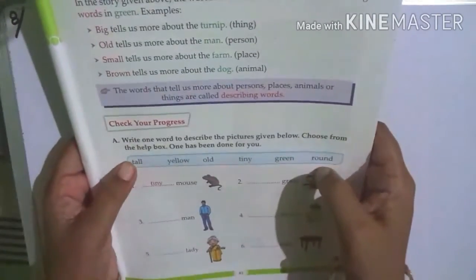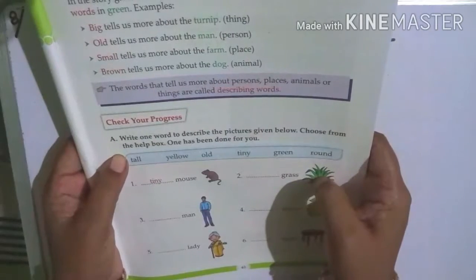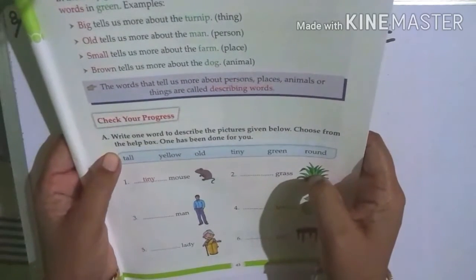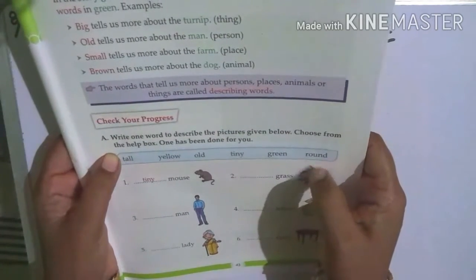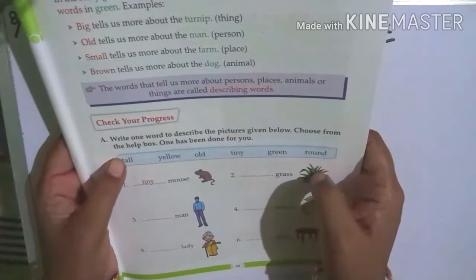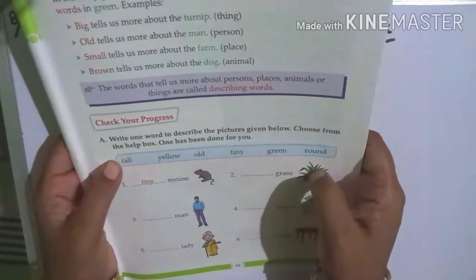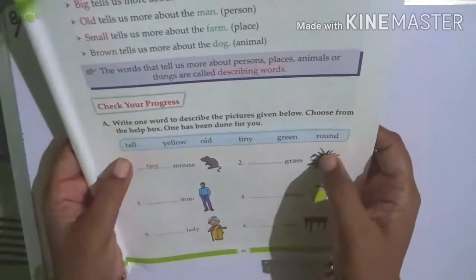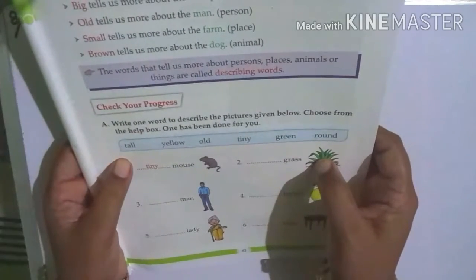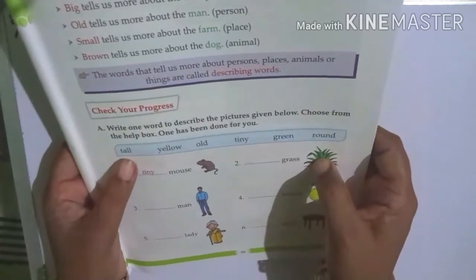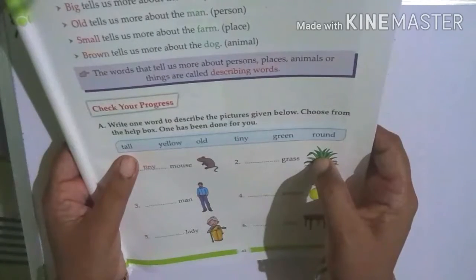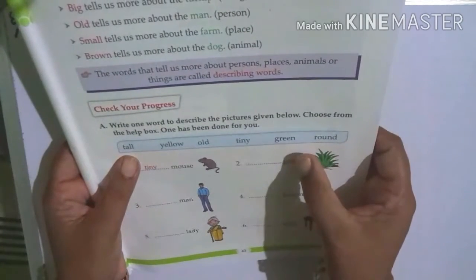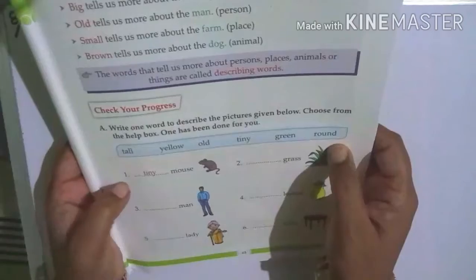Check your progress. A. Write one word to describe the pictures given below. Choose from the help box. One has been done for you. See, first the box: tall, yellow, old, tiny, green, round.